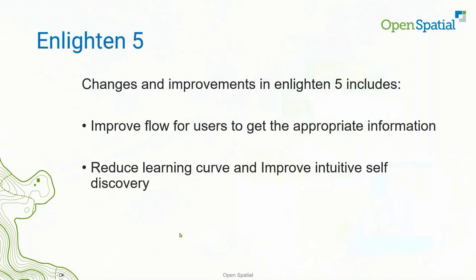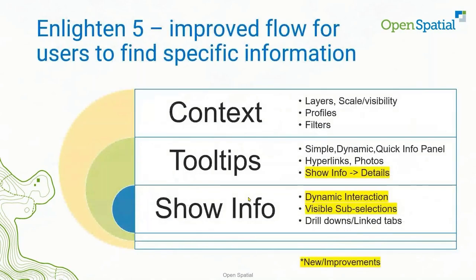Let's jump in. Enlighten 5 has a number of improvements, and I'm going to focus on a couple of them: the improved workflow for users — specifically how to get appropriate information and drill down to find more detail about something on the map — and reducing the learning curve to make it self-discovery and intuitive. This diagram shows that the user has context. Most web maps have layers, with visibility that can change at different scales.